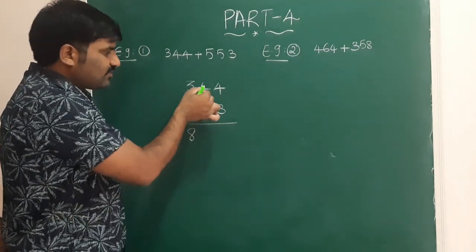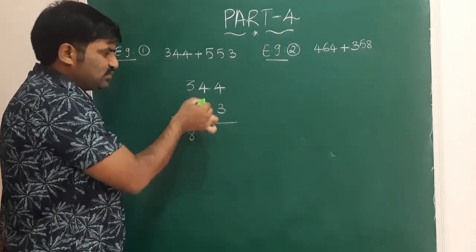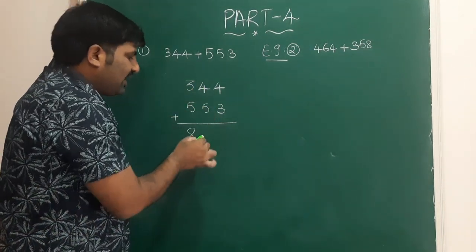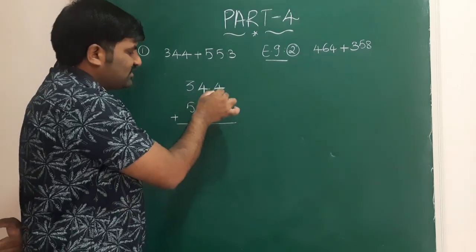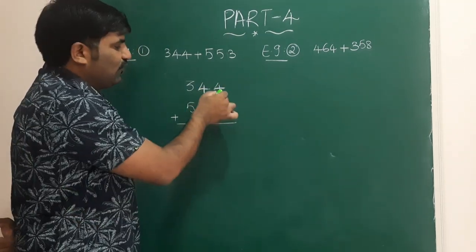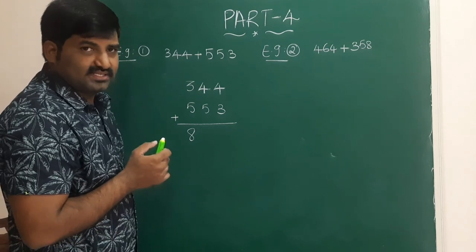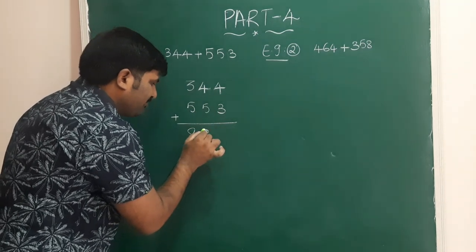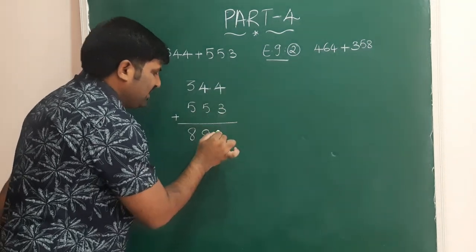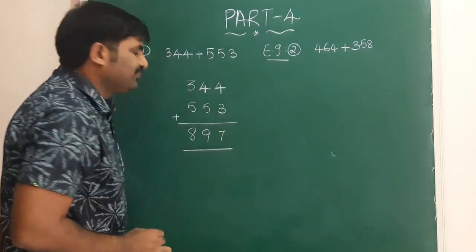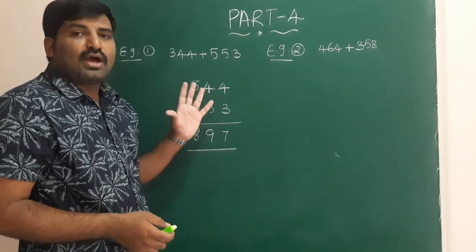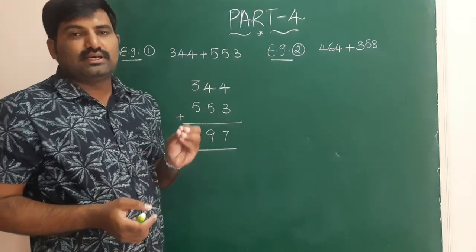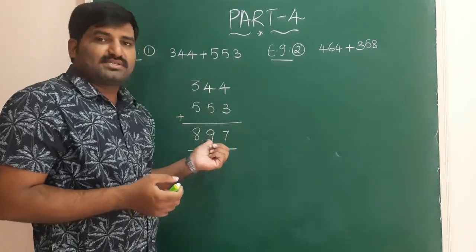Now for the next pair: 4 plus 5 is 9. Before writing 9, check the next two digits — 4 and 3. Since 4 plus 3 is 7, a non-carry number, you can write 9 directly. Then 4 plus 3 is 7. The sum is 897. In this example all pairs are non-carry, so we wrote each digit directly without adding any carry.